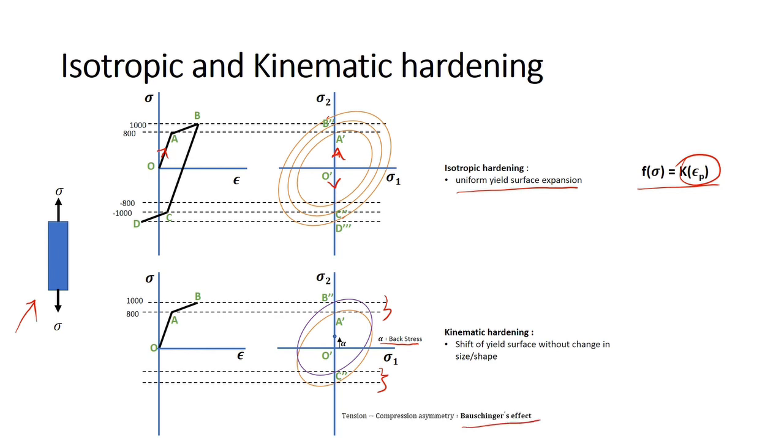Now, as we unload from B', we hit the yield surface at C' and it starts plasticizing earlier in compression as compared to isotropic hardening. And as we load again to D, the surface shifts accordingly.